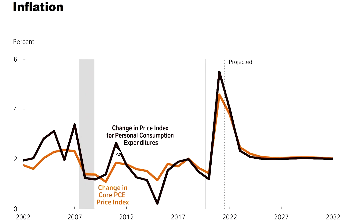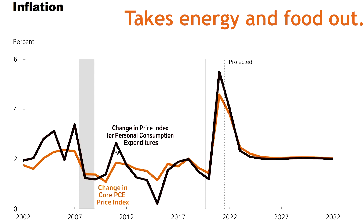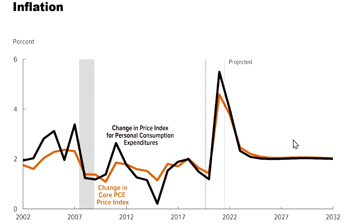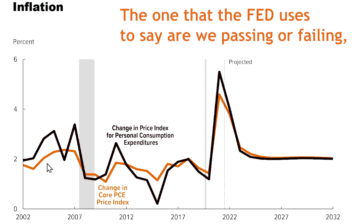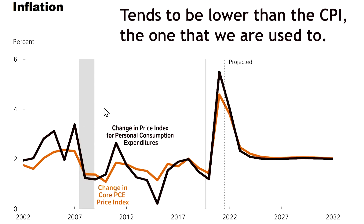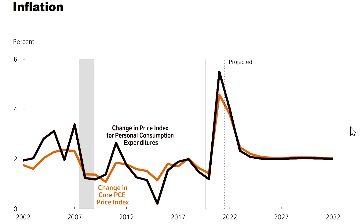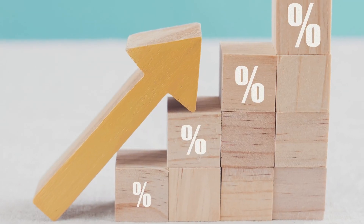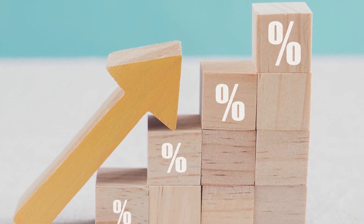In this data, the core — which takes energy and food out — is generally lower than the overall measure. The PCE, the one the Fed uses to say whether they're passing or failing, tends to be lower than the CPI, which is what we're more used to. CPI says if ground beef goes up 20%, that's a 20% increase. But the PCE, which the Fed uses, says if ground beef goes up 20%, they don't count ground beef as much.